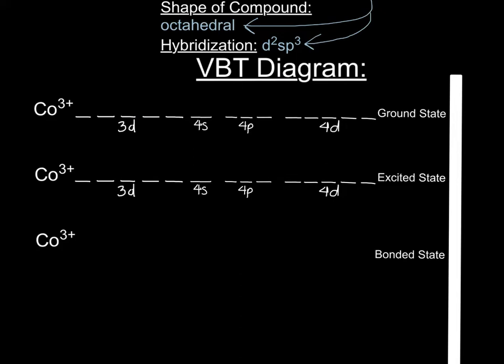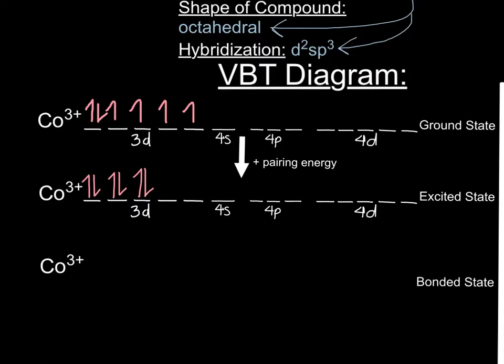Within the coordination compound that we are studying, the essential atom is cobalt — specifically Co³⁺. By its configuration in the periodic table, cobalt 3+ has 6 electrons in the 3D orbital. As there are four unpaired electrons in the 3D orbital, we can pair those up in the excited state by adding pairing energy.